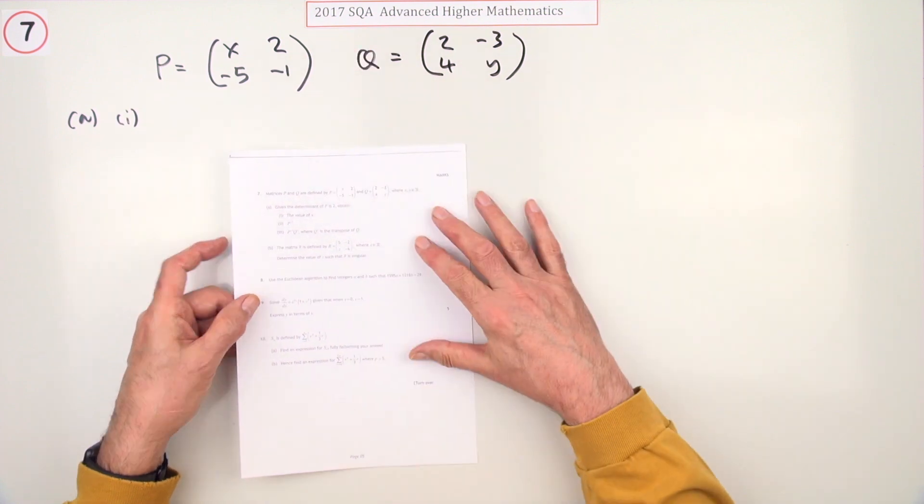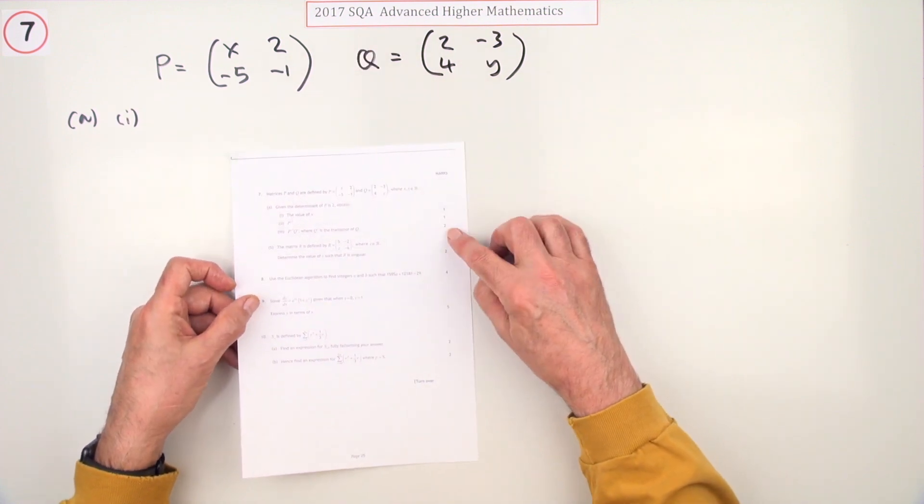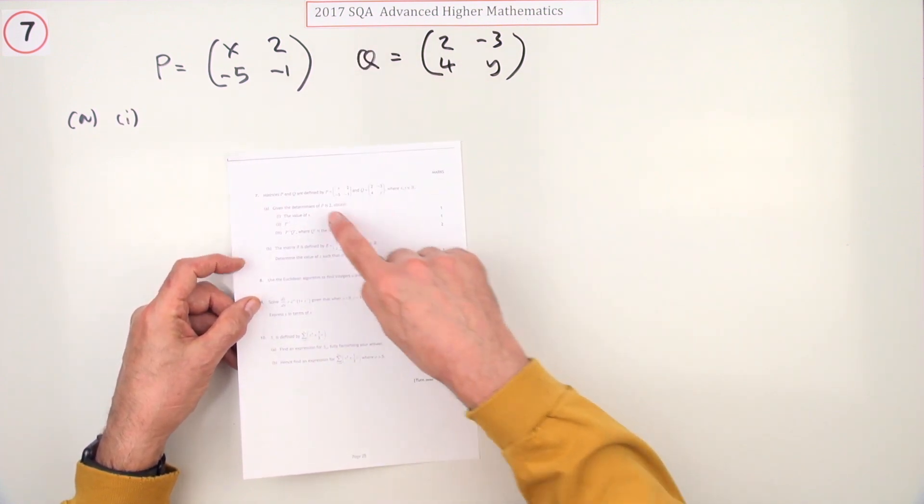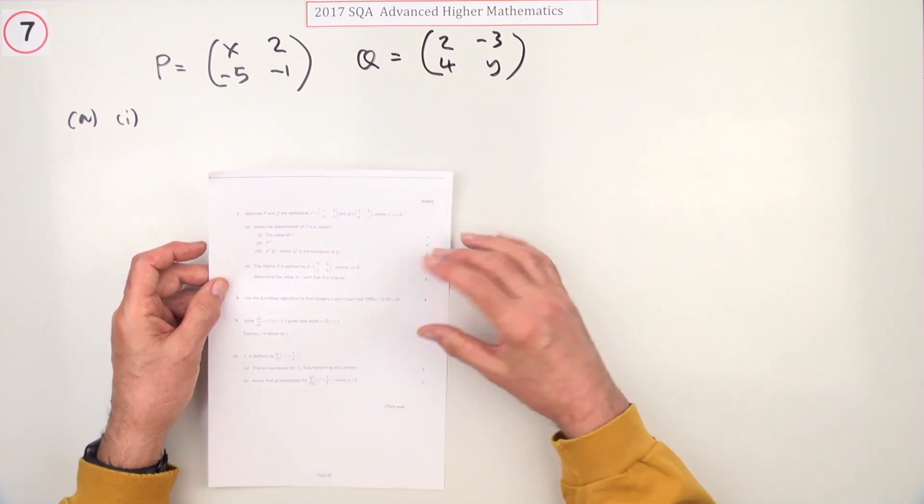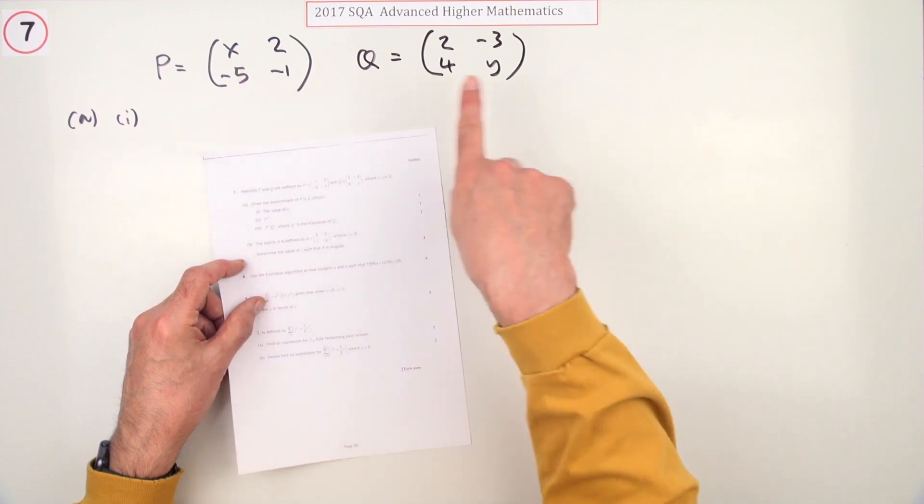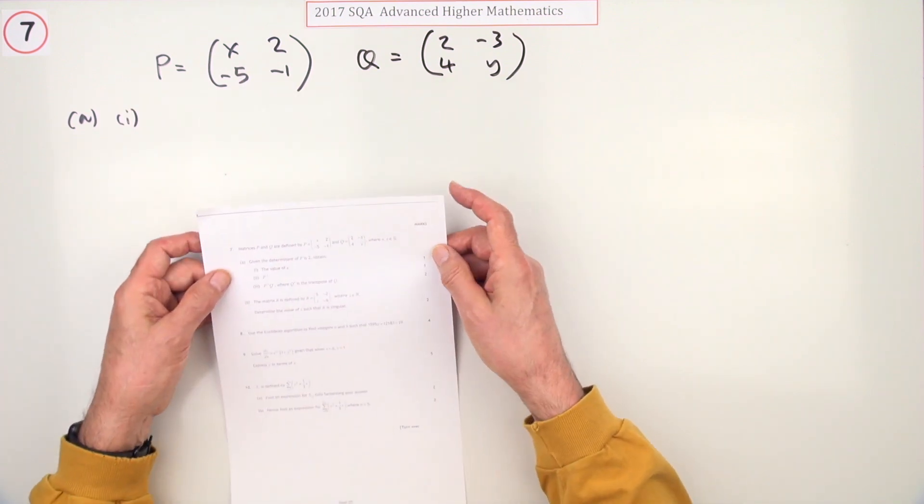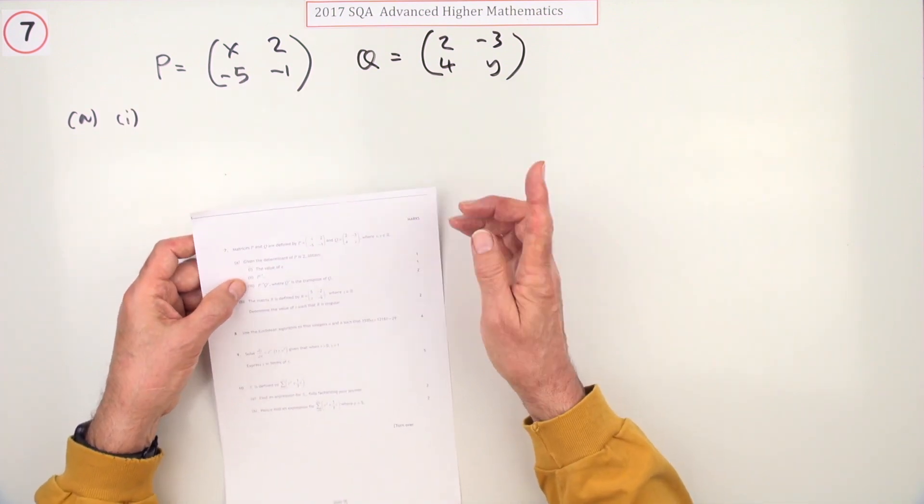Number 7 from the 2017 Advanced Higher exam. Six marks for matrices - a question on two by two matrices with letters in them: x, y, and z. The first part is for one mark.